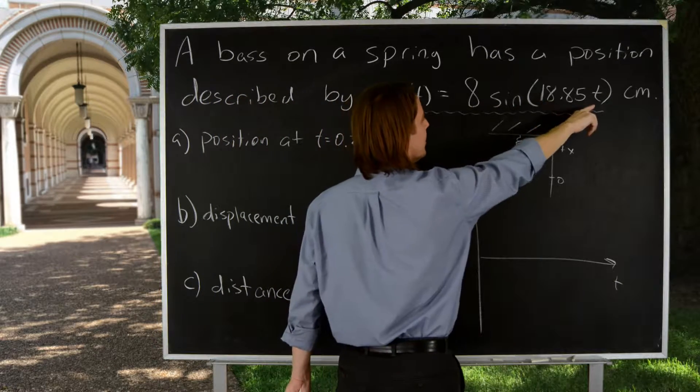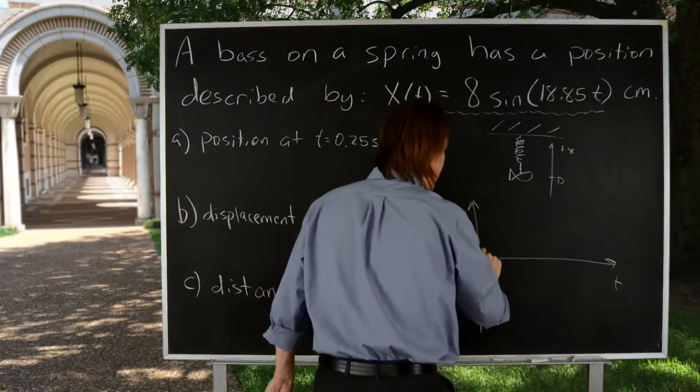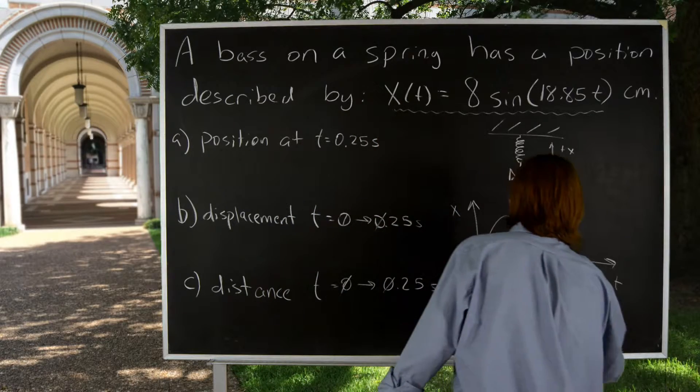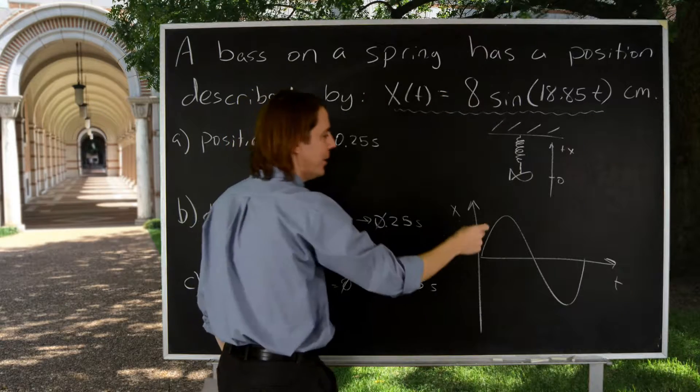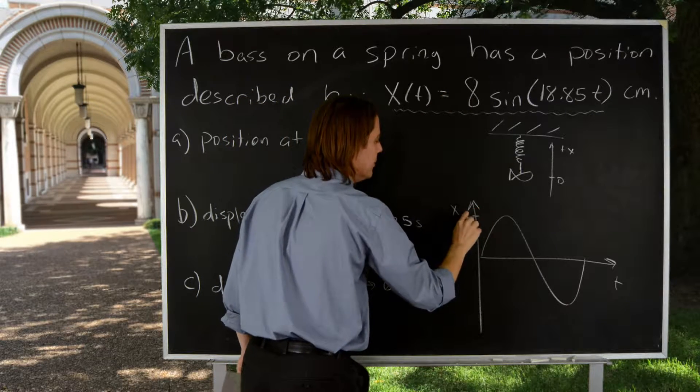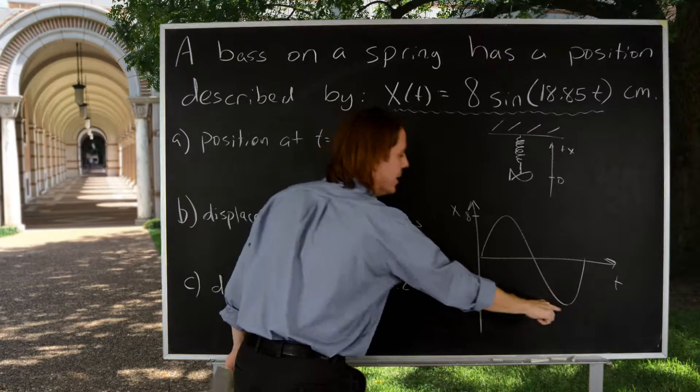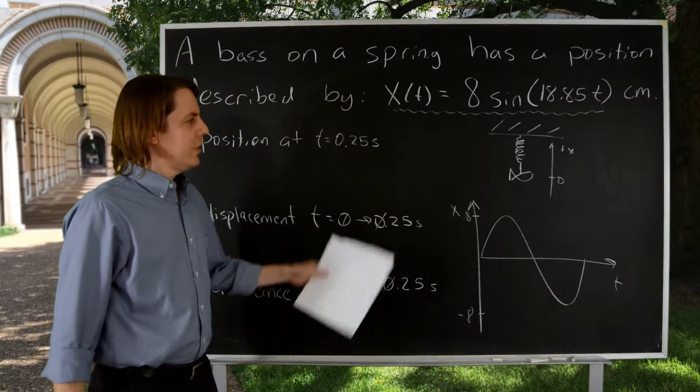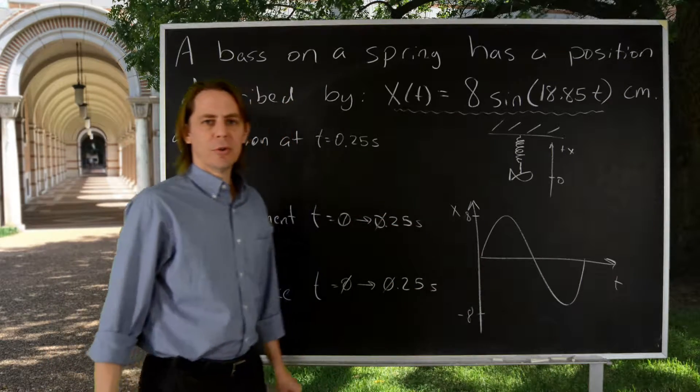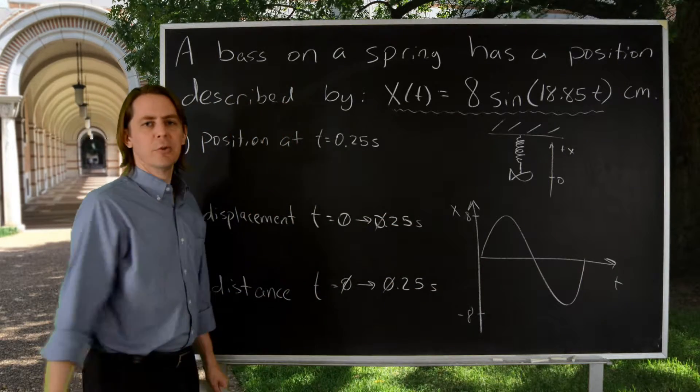It starts, we know sine of zero is zero, so we know sines always start here. It'll look something like that. I know sine goes from one to minus one, so I know this is going to be eight. And this down here, it's going to go to minus eight. So that just gives you some idea of what the motion looks like before you go trying to do this part.